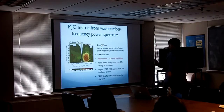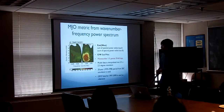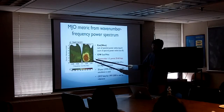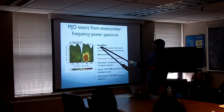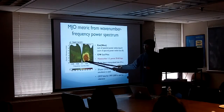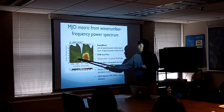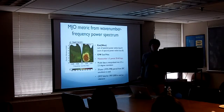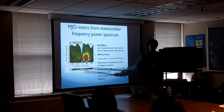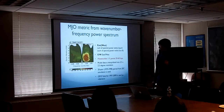For evaluating CMIP3 and CMIP5 models and how they simulate MJO, we define some metrics from the wavenumber-frequency power spectrum of precipitation. 'East' is the sum of spectral power over the MJO domain. 'West' is spectral power over the corresponding westward domain. East over West is the ratio between the two. Both East power and the East/West ratio are important metrics for any climate model.